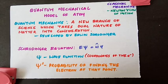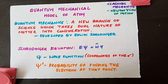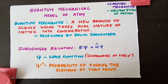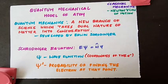Schrödinger came up with a very famous fundamental equation of quantum mechanics: E·ψ = Ĥ·ψ. This equation incorporates the wave-particle nature of matter as proposed by de Broglie. To solve this equation requires a knowledge of higher mathematics and is quite complex, so we will not go into detail — I will just explain what is in this equation and what it represents.